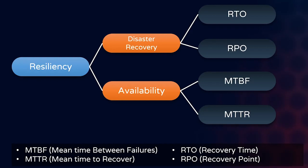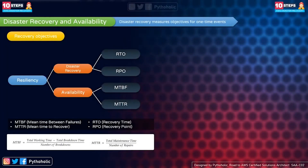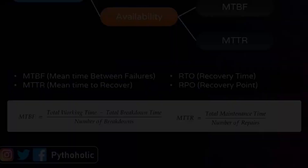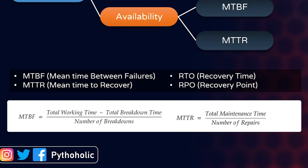Availability focuses on uptime or downtime over a period of time — the mean value. We need to focus on mean time between failures (MTBF) and mean time to recover (MTTR). To calculate MTBF: take the total working time of your application minus the total breakdown time, then divide by the number of breakdowns.